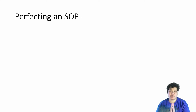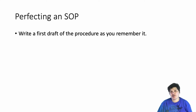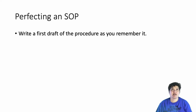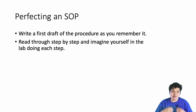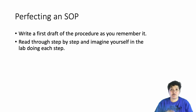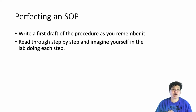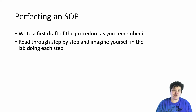So how do you write a perfect SOP? First, just write a draft and don't worry too much about it — you'll get better at this process as you go along. Then read through the draft, and with each step, imagine yourself in the lab doing that particular thing. See if you've left anything out. For example, if a step says 'titrate the acid with 0.2 molar NaOH,' ask yourself: how exactly do you do that?